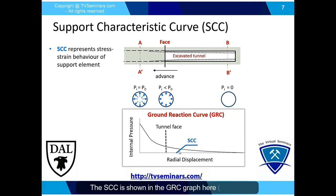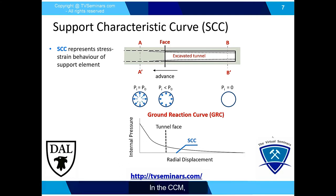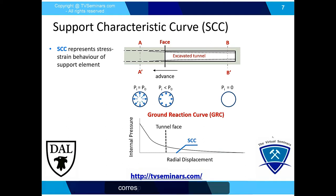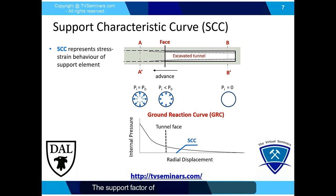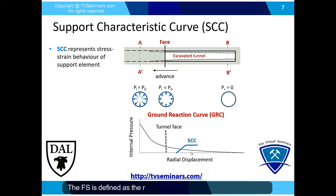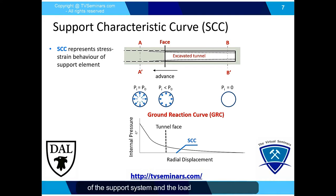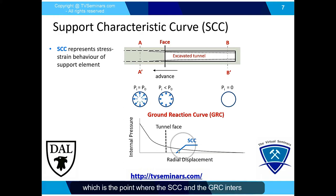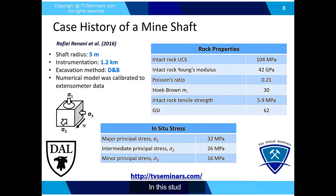The SCC represents the stress-strain behavior of the support element used in the excavation, and is shown in the GRC graph. In the CCM, the LDP is used to determine the radial displacement corresponding to the tunnel face and the radial displacement at which the support is installed. The support factor of safety is then calculated by plotting the SCC on the GRC. The factor of safety is defined as the ratio between the maximum load capacity of the support system and the load at equilibrium, which is the intersection point of the SCC and the GRC.